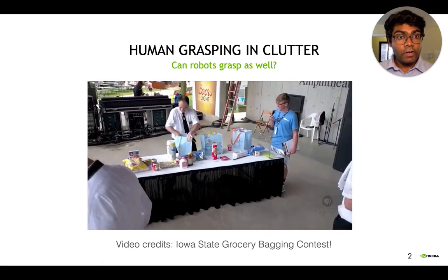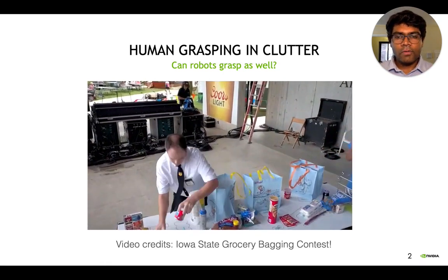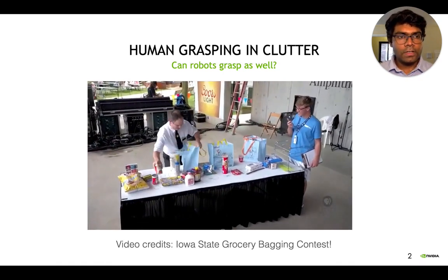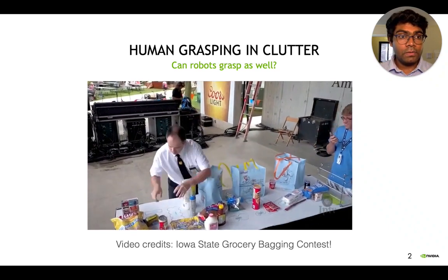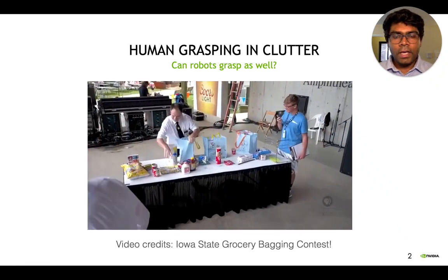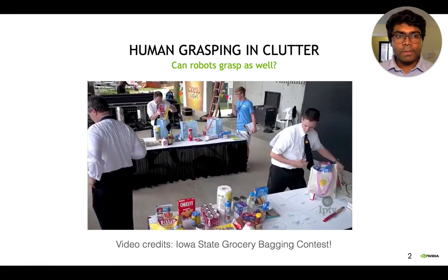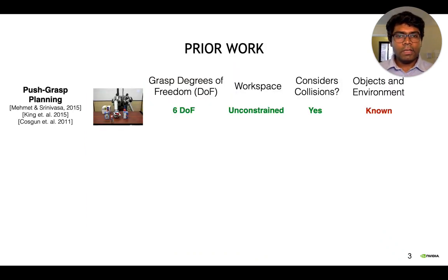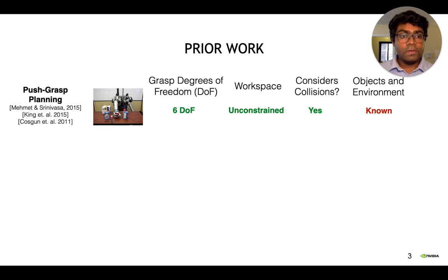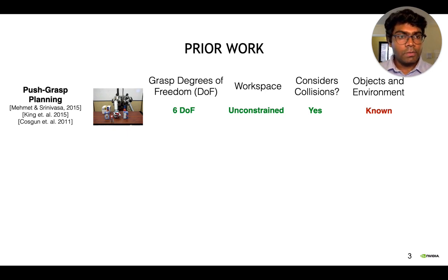We humans are very good at grasping in clutter, but robots definitely have a long way to go in terms of catching up to our level of dexterity. This problem of grasping in clutter has been studied before in the community, typically from a planning perspective. Unfortunately, it's hard to generalize these methods to unknown objects and environments, because we typically end up making a lot of assumptions on the object pose and shape information.